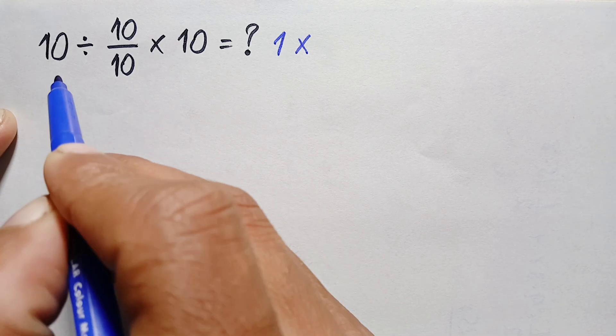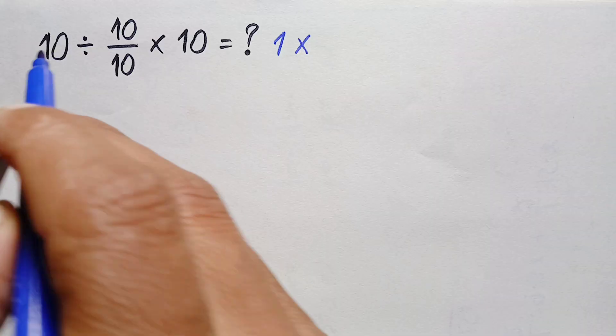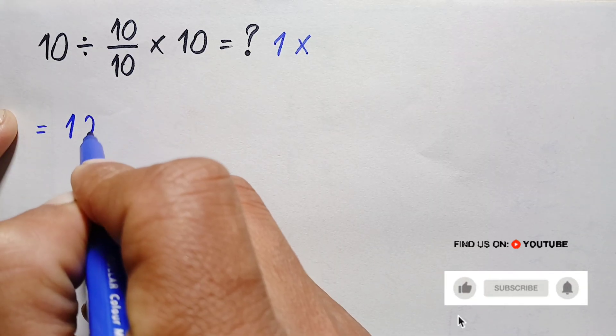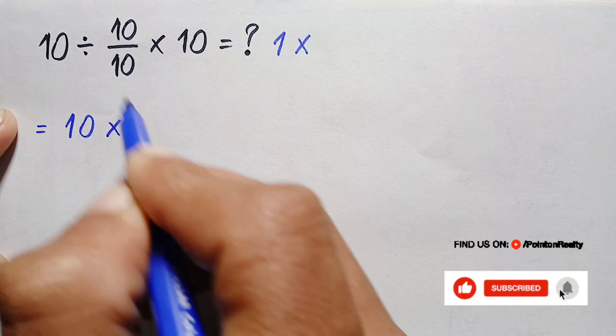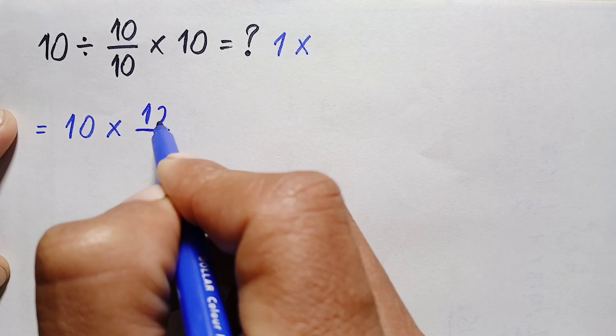To do this division, we will apply the KFC rules. By KFC rules, we will leave the first number the same—this will be 10—we will change the division sign to multiplication, and we will reverse this fraction. That will be 10 times 10/10 times 10.